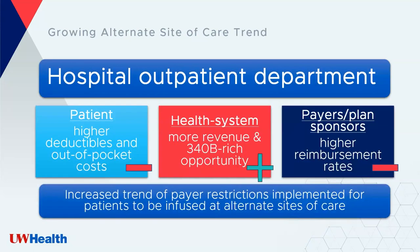That essentially encompasses the alternate site of care conundrum we see today. In hospital outpatient departments: patients face higher deductibles and higher out-of-pocket costs; health systems generally generate more revenue and have 340B opportunity; and for payers and plan sponsors, it's a higher reimbursement rate. The reimbursement rates in hospital outpatient departments are higher for payers, so if they can pay less by pushing patients to be infused in an ambulatory setting, they'll generally do that — and we're now seeing payers restricting reimbursement to push patients to lower cost sites of care.